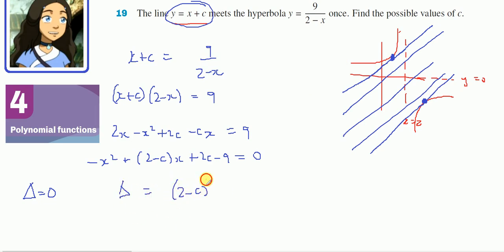2 minus c squared, b squared, minus 4 times minus 1 times 2c minus 9.